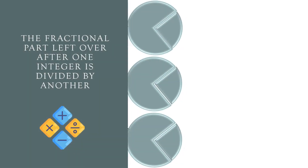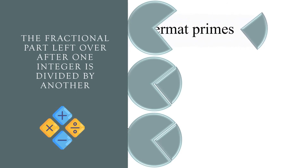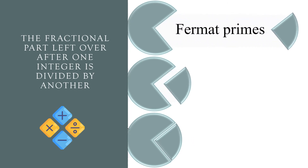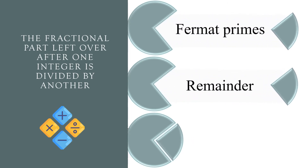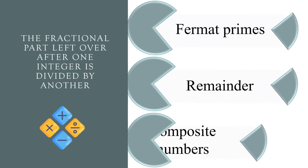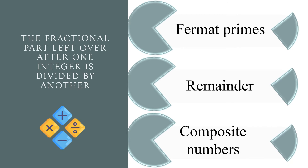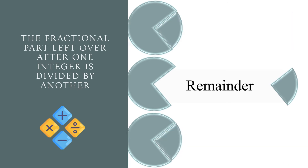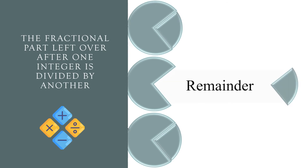The fractional part left over after one integer is divided by another. Fermat primes, remainder, or composite numbers? The correct answer is remainder.